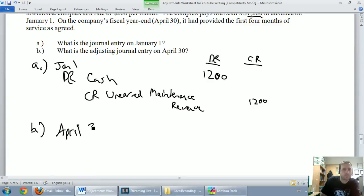April 30th is our fiscal year end, our financial year end. We're going to do financial statements. And what we've got to say on our fiscal year end is, we don't owe these guys $1,200 worth of service anymore. It says we've provided the first four months of service as agreed. So if we provided the first four months of service as we agreed upon, we don't owe them $1,200 anymore. We've done some of the work. We've got to figure out how much of that work we've done.